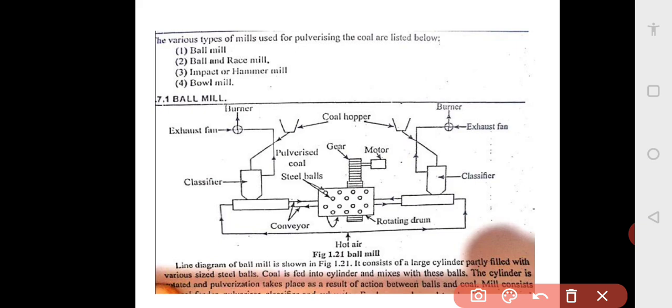This is the ball mill. It uses steel balls in the drum. Coal is fed into the drum, and the drum is rotated with a motor and reduction gearbox. Conveying of the pulverized coal is done by hot air, separated in the classifier, and flow is controlled by dampers in the exhaust fan.